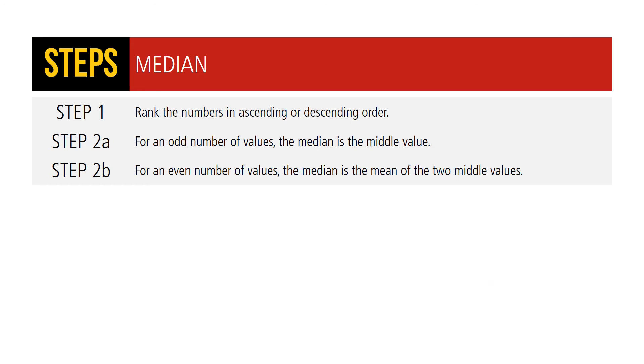There are three steps to determining the median. Step 1: rank the numbers in ascending or descending order. Step 2a: for an odd number of values, the median is the middle value. But step 2b: for an even number of values, the median is the mean of the two middle values.